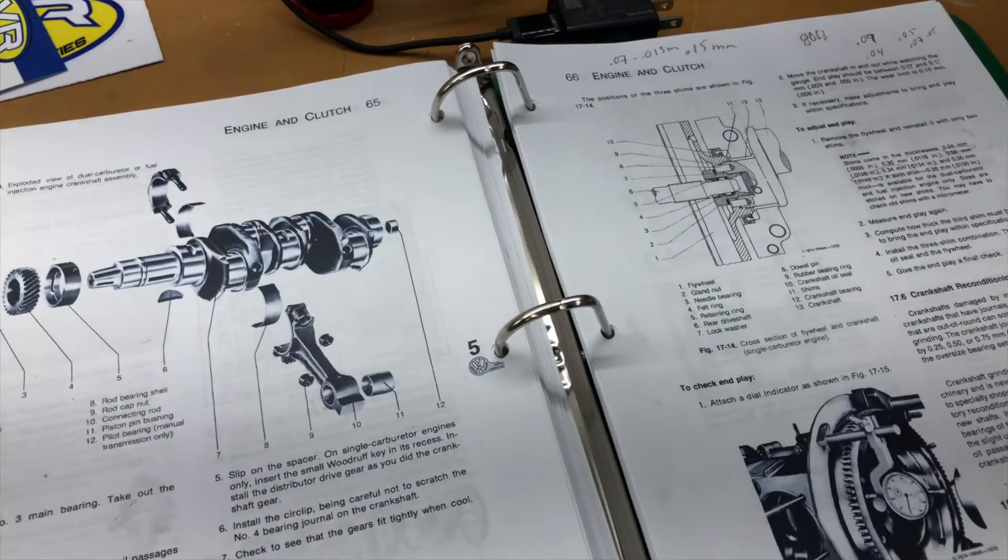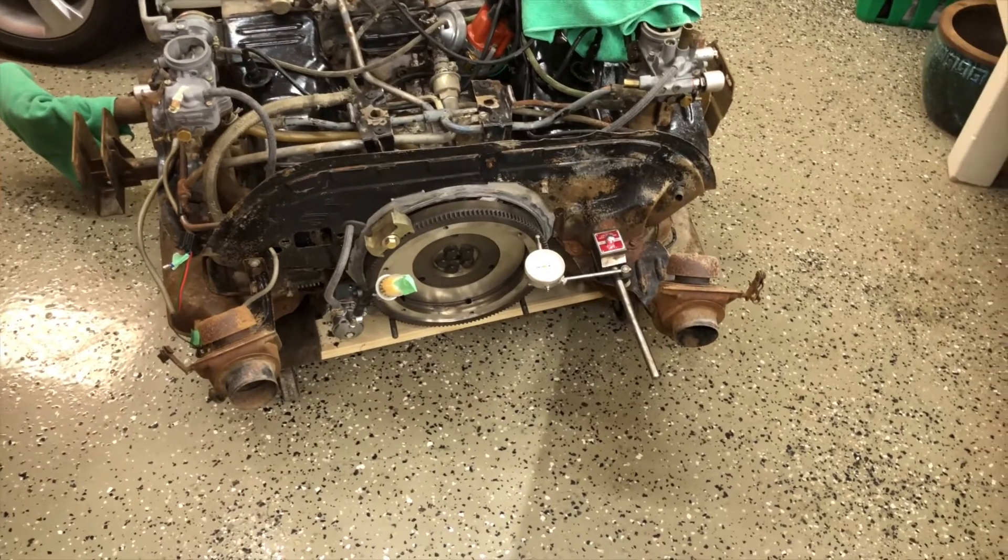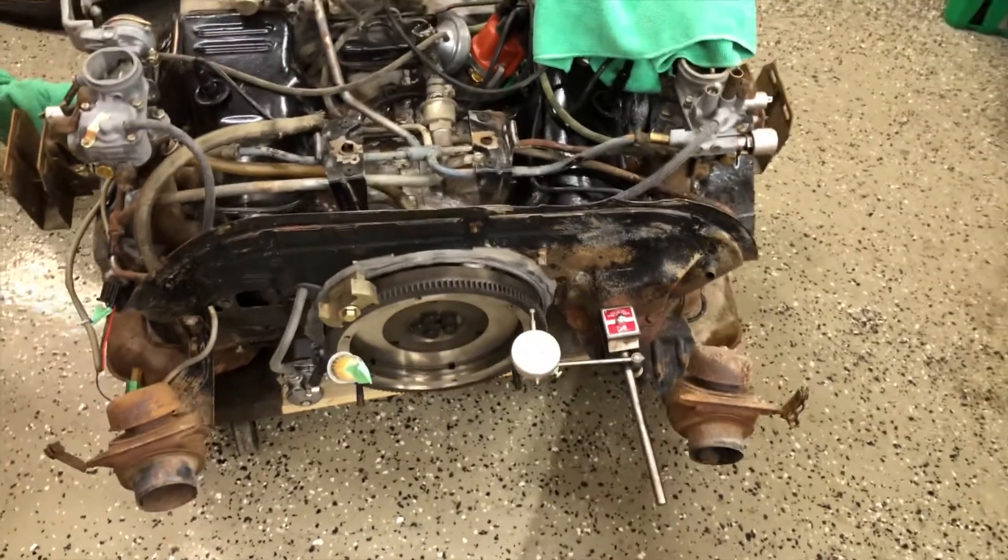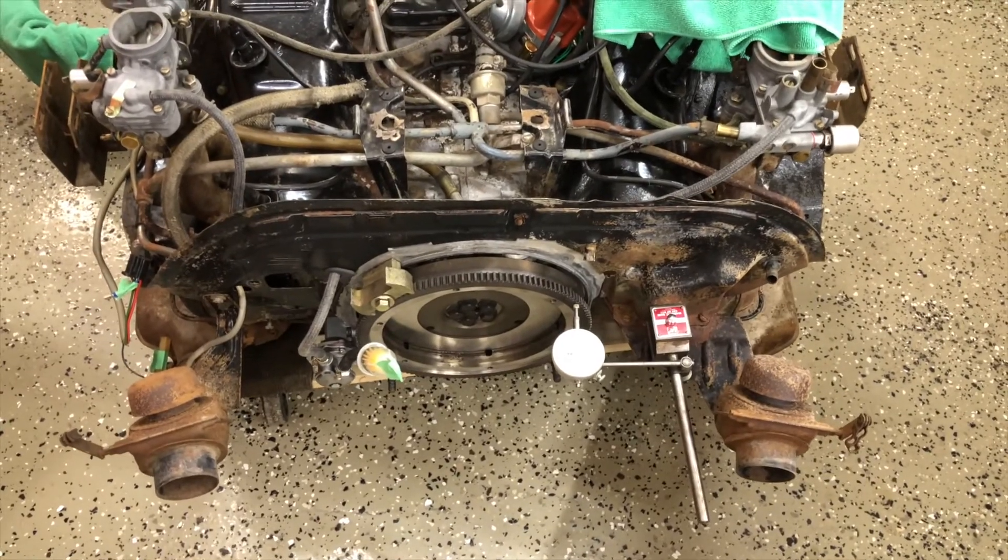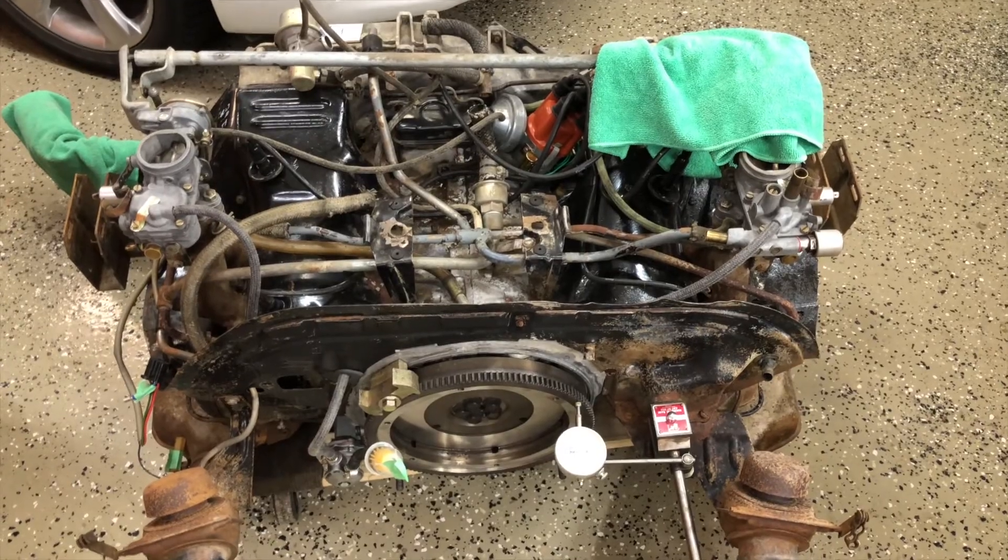I had already done the math so I knew the two shims I had to buy. Now we're within spec, and so the next step will be I'm going to pull that flywheel back off, I'm going to put my new oil seal in, put that flywheel on and make sure it's torqued with the correct spec, and the engine will be effectively done and ready to run.